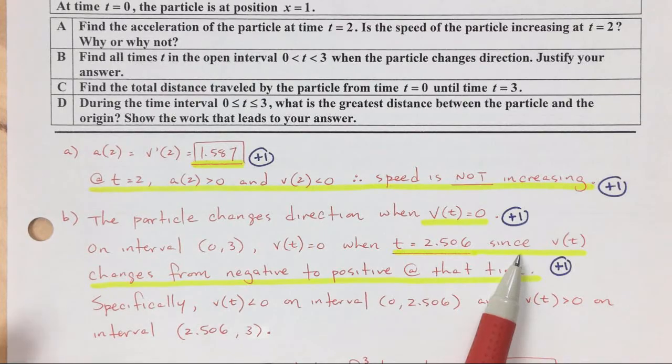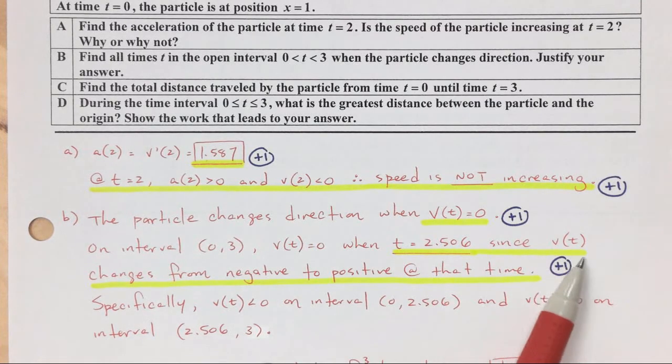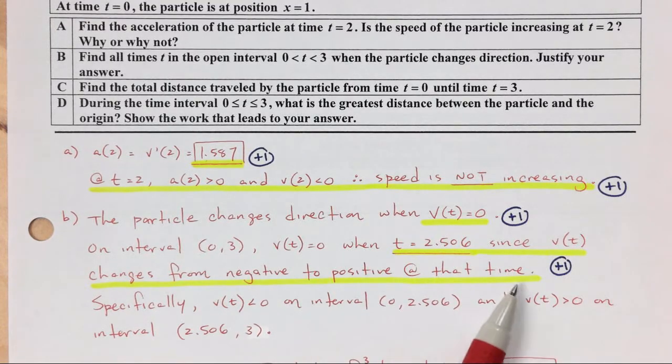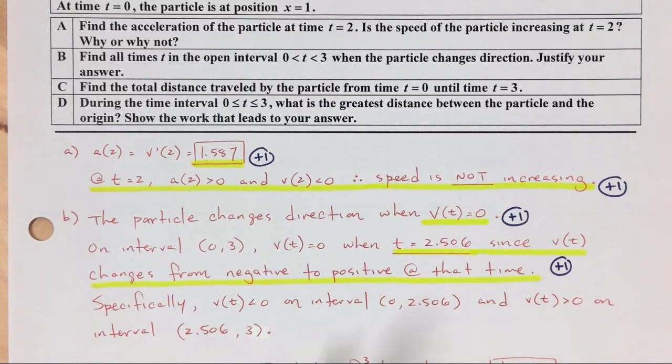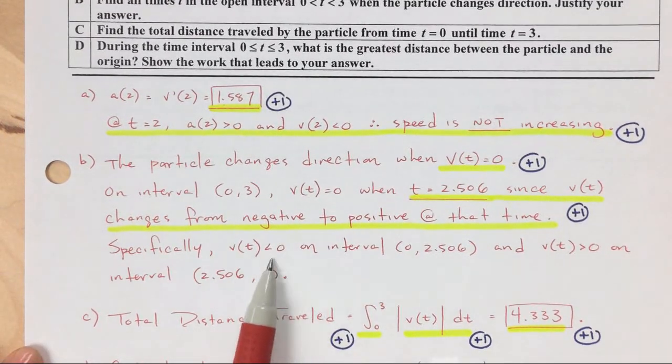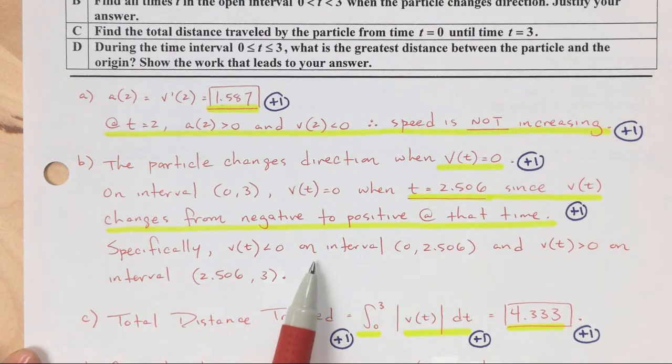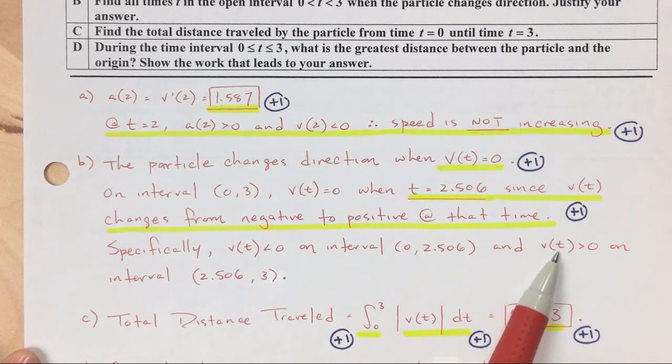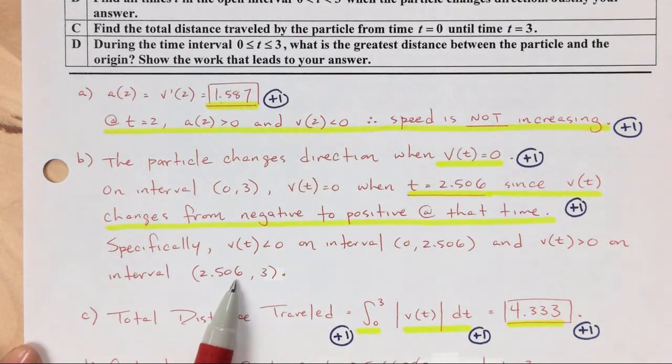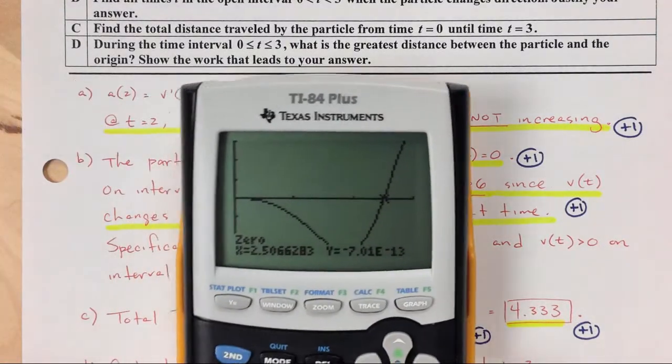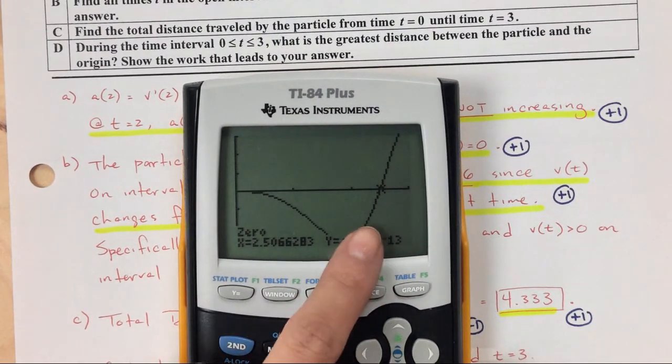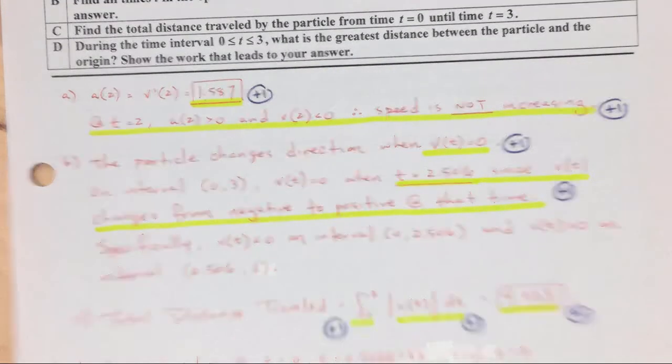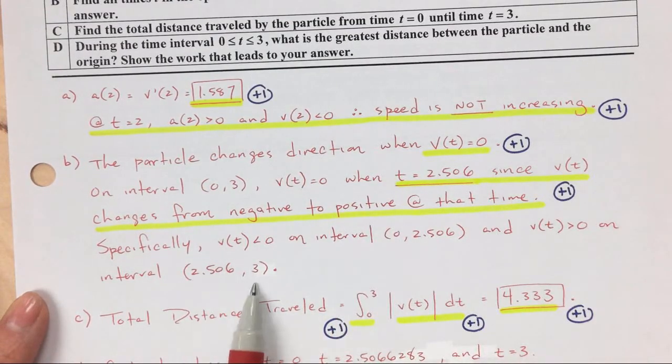Since, and I have to justify my answer, remember? So since the velocity changes from negative to positive at that time. So that is enough. But if you want to be real specific about it, you can say specifically, the velocity is negative on this interval from 0 to 2.5. And then the velocity is positive on the interval from 2.5 to 3. So we see that in the graph, it's under the x-axis, and then it's above the x-axis. So either of those are going to be fine to get you that last point for your justification as well.